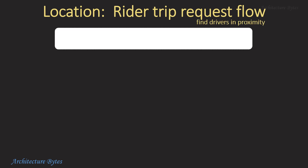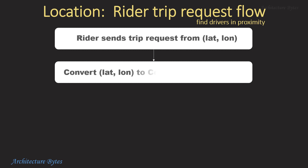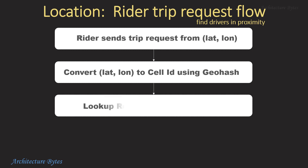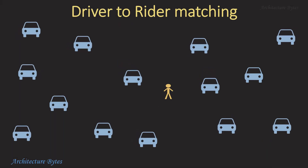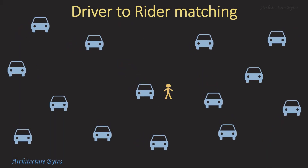For the rider trip request flow, the rider sends a trip request from a location (latitude and longitude). The server converts the location to a cell ID using Geohash, looks up the region ID based on cell ID, and then queries the region cache server for drivers in those cells. This is how we do driver-to-rider matching efficiently.